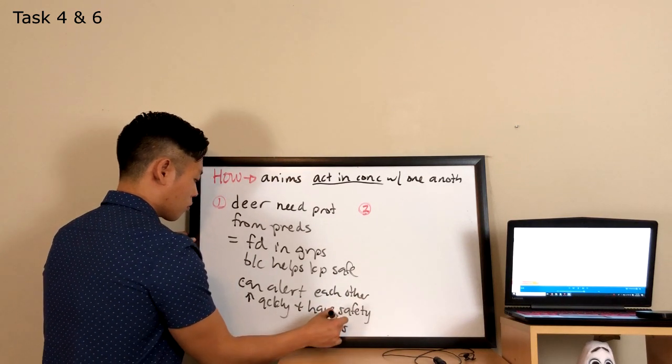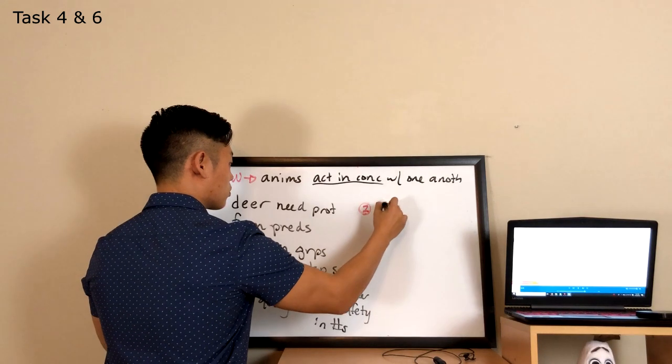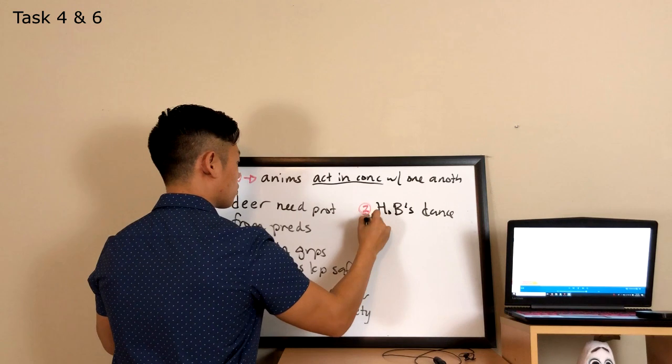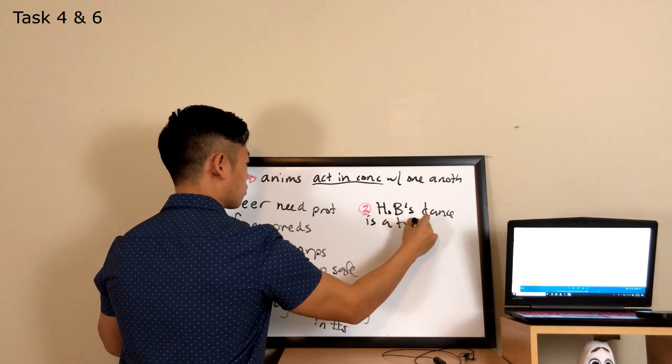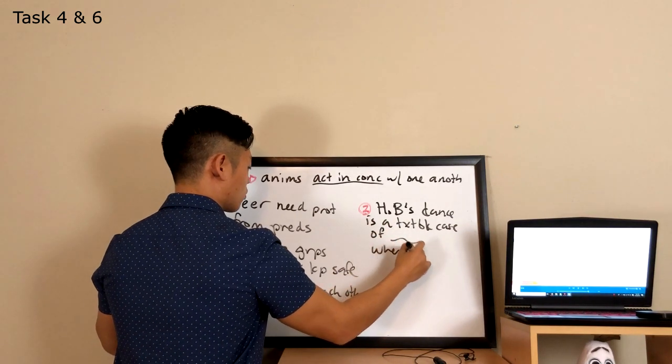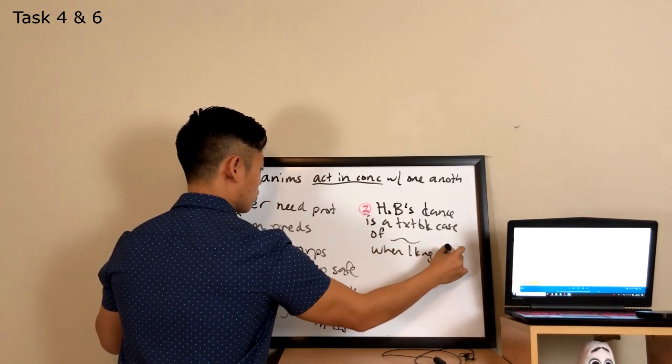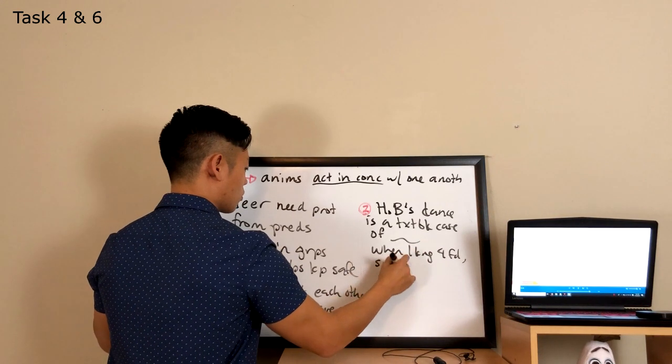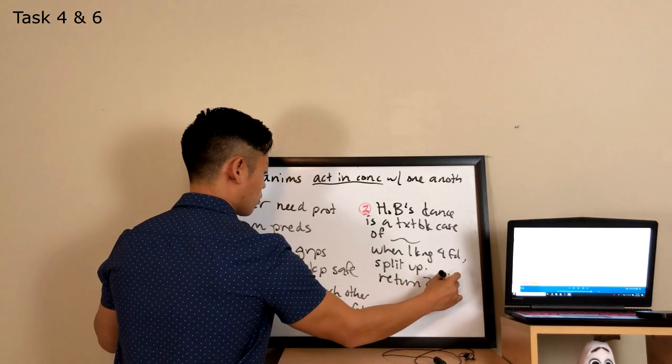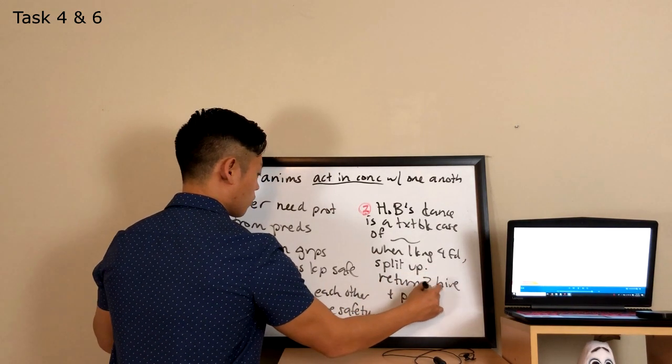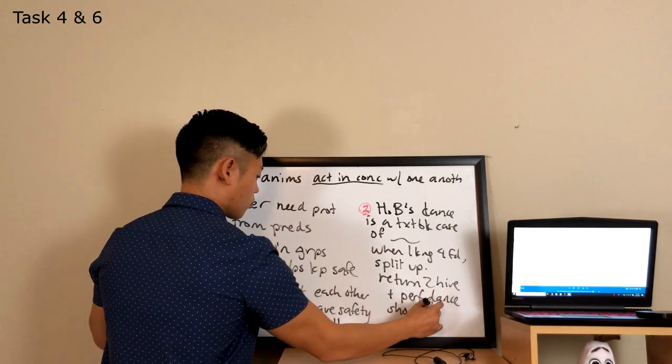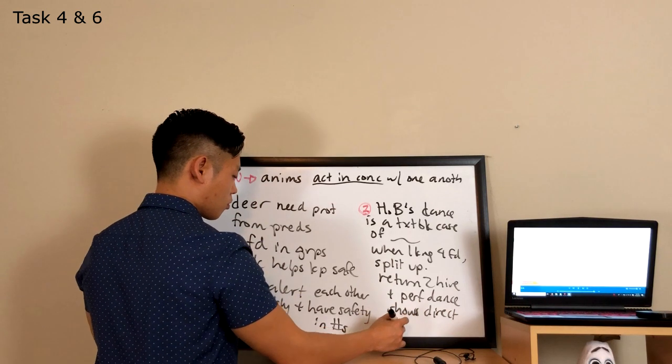Now, how about honeybees? They work together, too. You've heard of the honeybees dance, right? That's a textbook case of animal cooperation. When looking for food, honeybees all head in different directions. When they find a potential food source, they return to the hive. Then they perform a complicated dance, which scientists believe actually gives the direction, distance, and amount of food located. This allows the bees to abandon unpromising searches and move on to food sources that are closer and which will be able to provide more food for the hive.